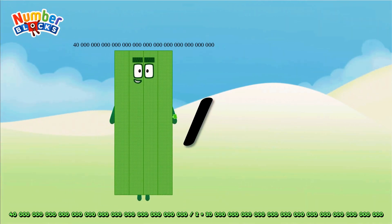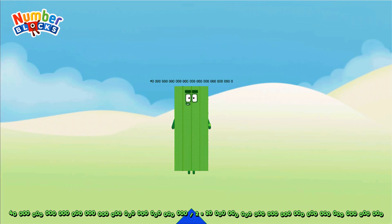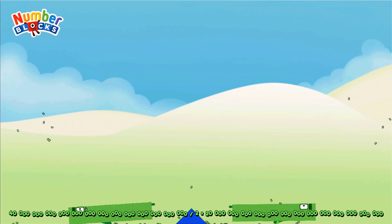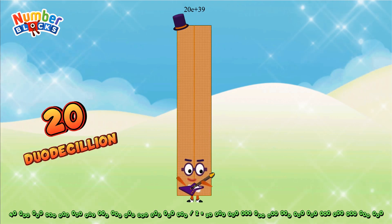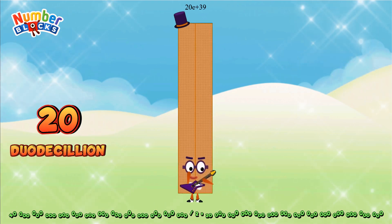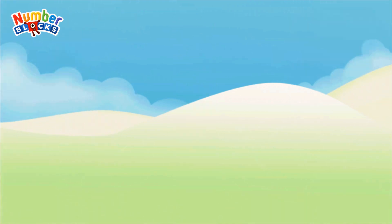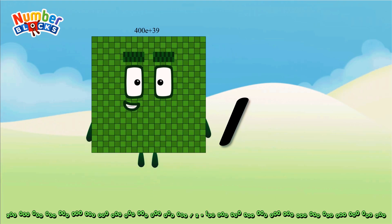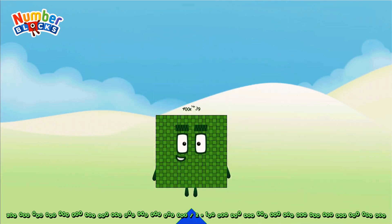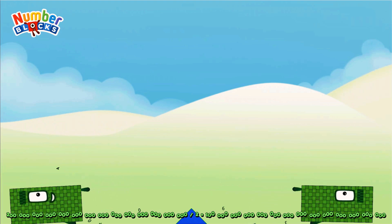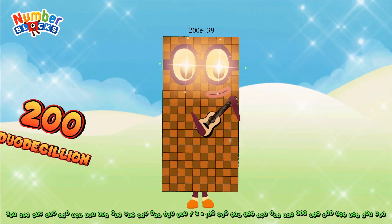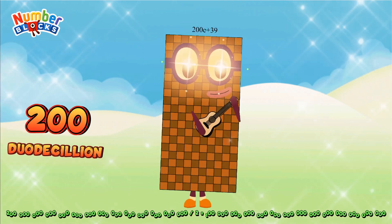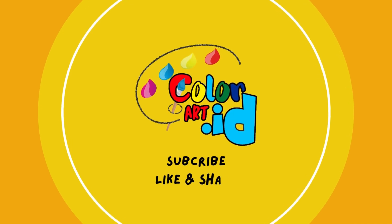40 duodecillion divided by 2 equals 20 duodecillion. 400 duodecillion divided by 2 equals 200 duodecillion. Hope you like the video!